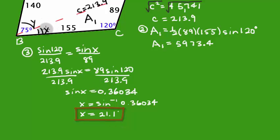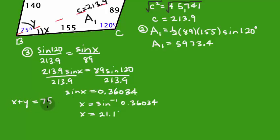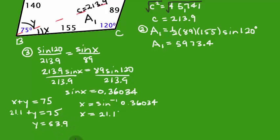Now we know that angle x is 21.1 degrees. Since x plus y must equal 75, I subtract 21.1 from both sides, giving y equals 53.9 degrees. That is the angle between the two sides of the second triangle, so I'll mark it in the diagram: this angle is 53.9 degrees.